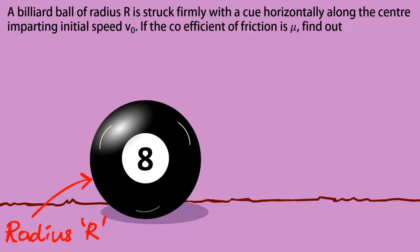It is struck by a cue for a very brief period in such a way that the line of force passes right through the center, imparting it an initial speed of v0.